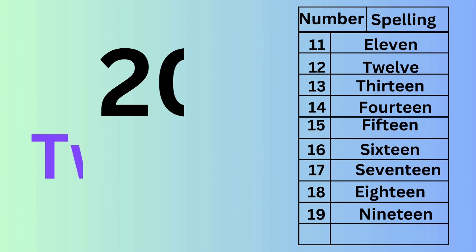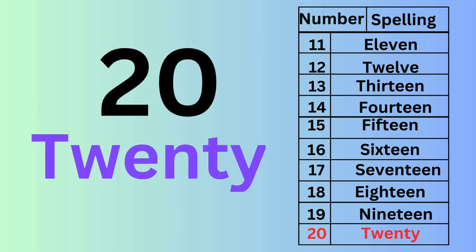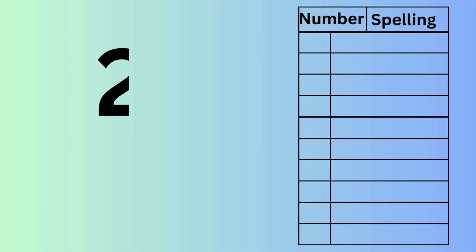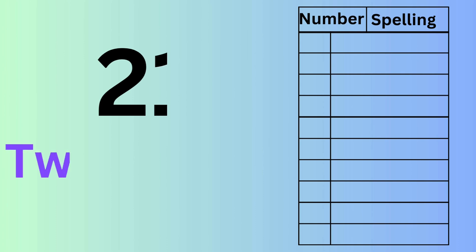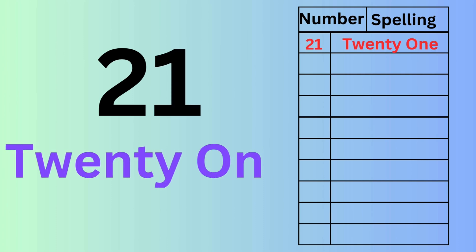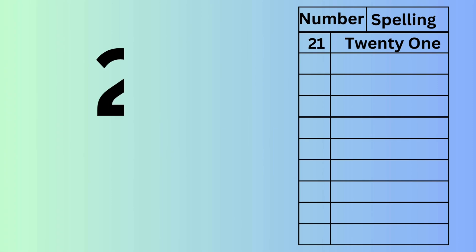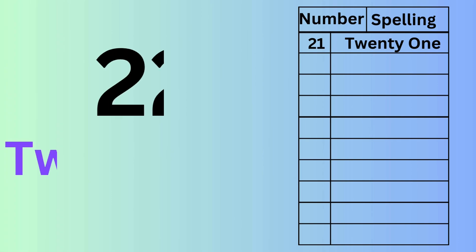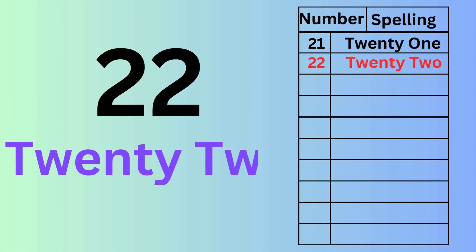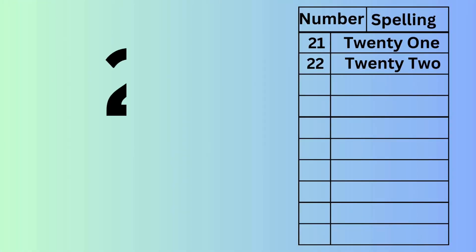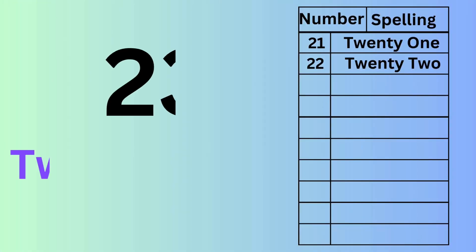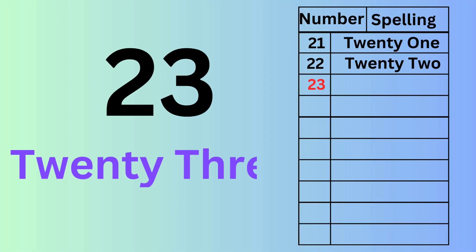T-W-E-N-T-Y, twenty, 20. T-W-E-N-T-Y-O-N-E, twenty-one, 21. T-W-E-N-T-Y-T-W-O, twenty-two, 22. T-W-E-N-T-Y-T-H-R-E-E, twenty-three, 23.